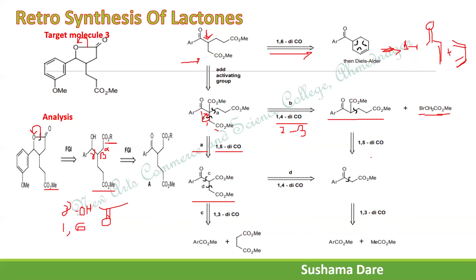The remaining fragment is itself a 1,5-dicarbonyl compound. Number it, and again disconnect the more substituted bond. After this 1,5-dicarbonyl disconnection, it gives one fragment plus the Michael acceptor — a vinyl ester, CH₂=CH–COOCH₃.